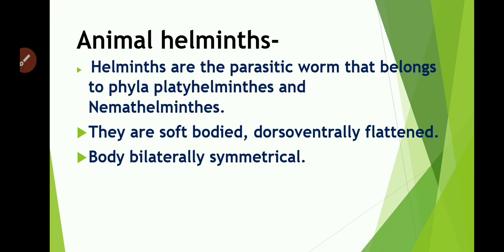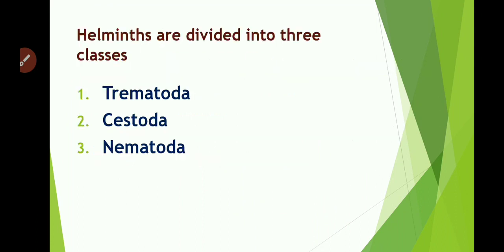Helminths are the parasitic worms that belong to the phyla Platyhelminthes and Nemathelminthes. These worms are soft-bodied animals. Their body is also dorsoventrally flattened and bilaterally symmetrical. Helminths are divided into three classes: Trematoda, Cestoda, and Nematoda.